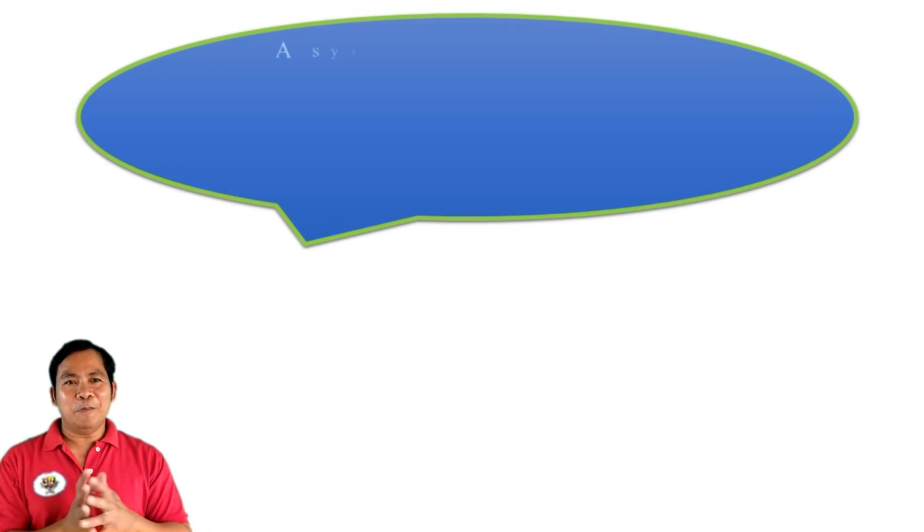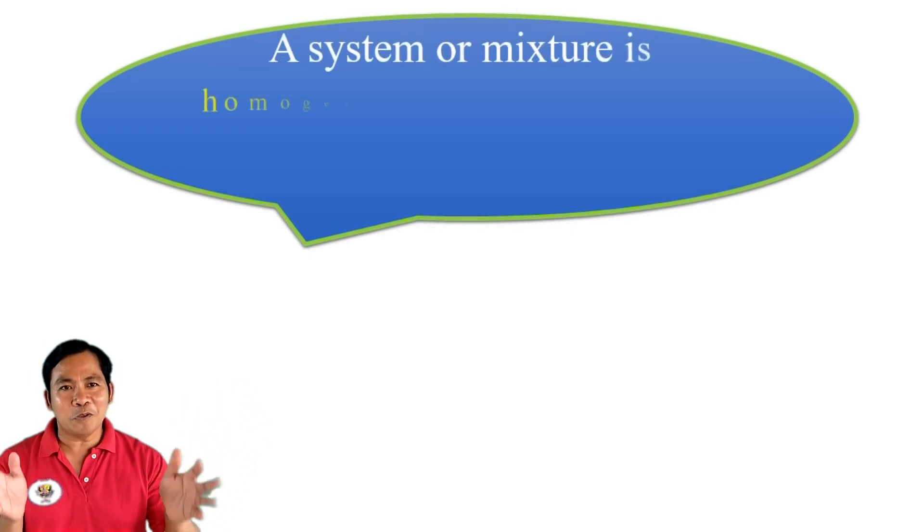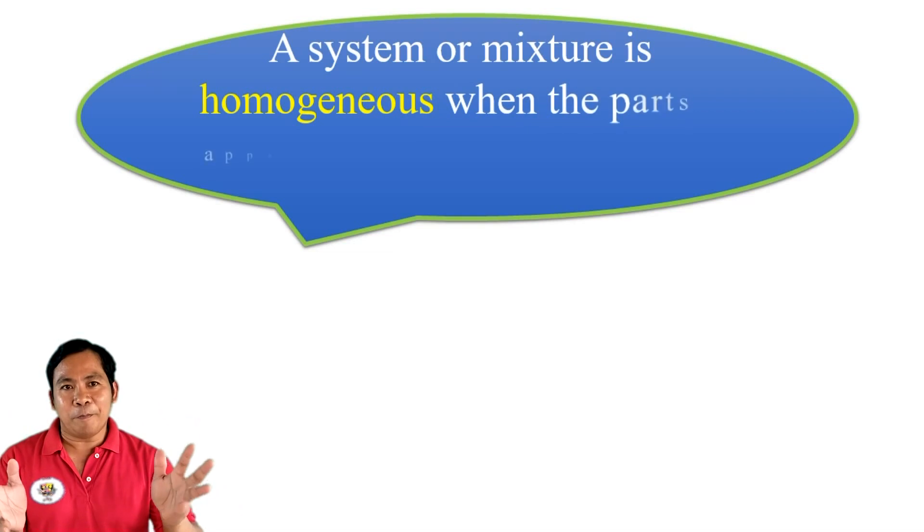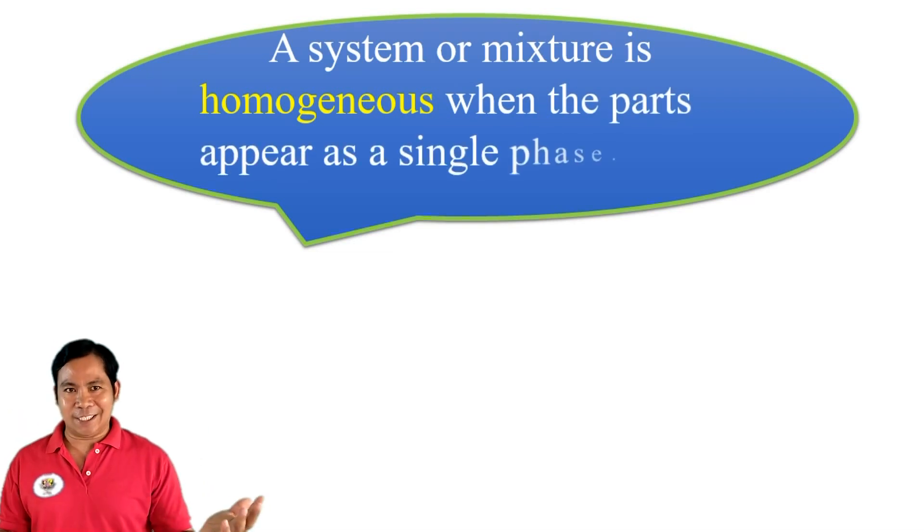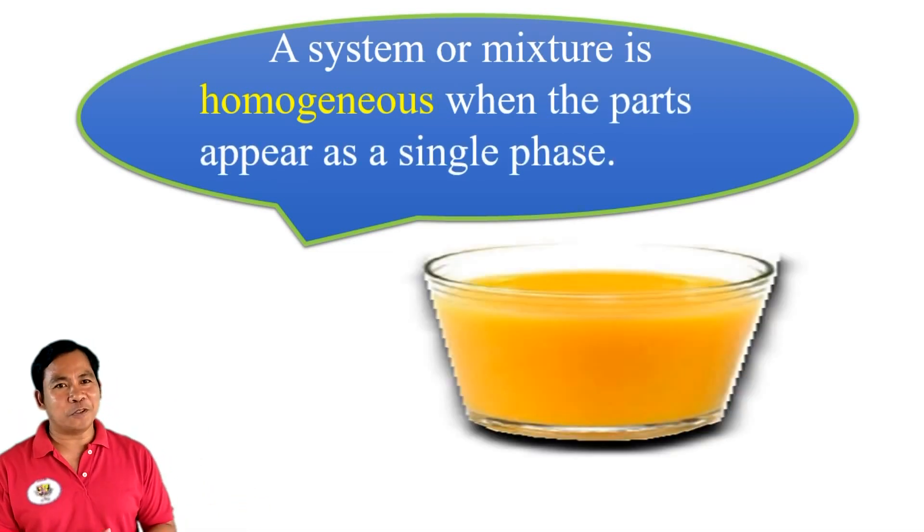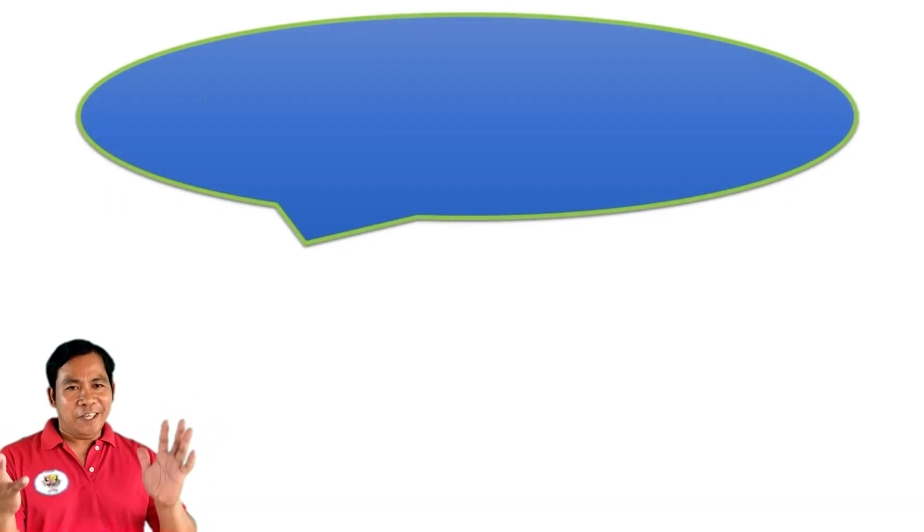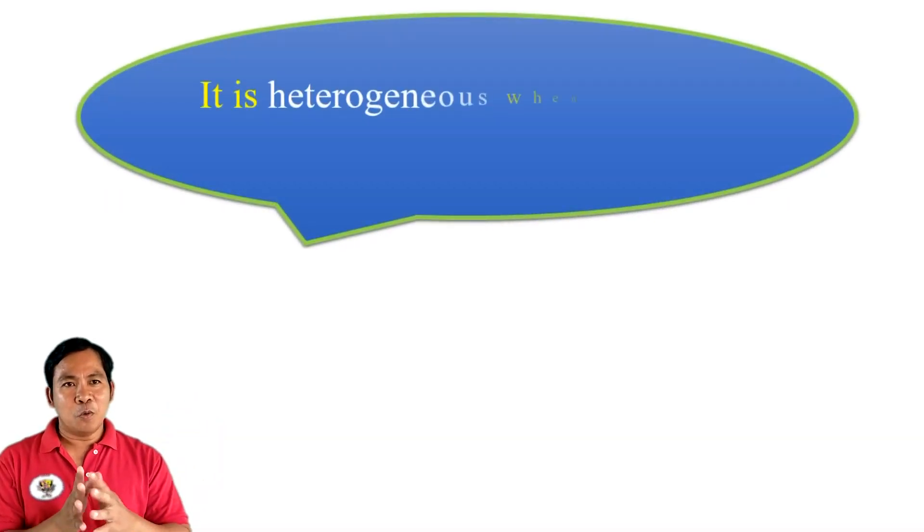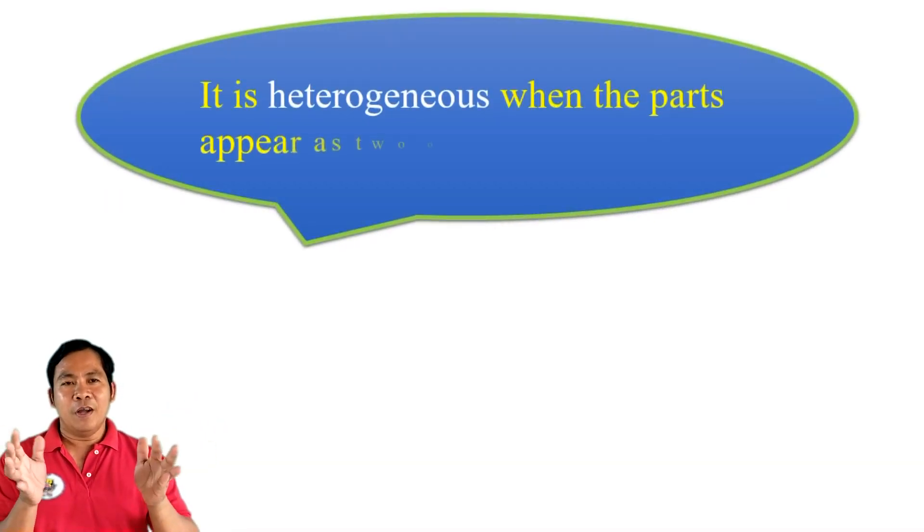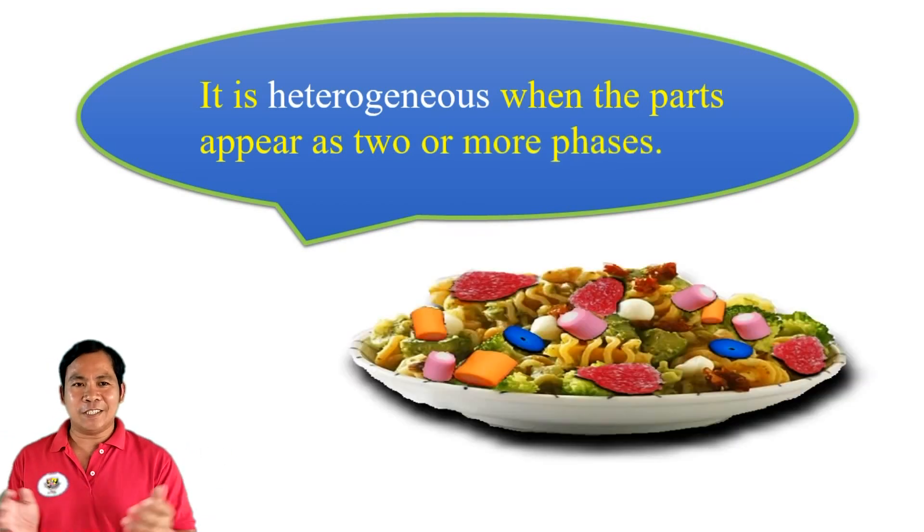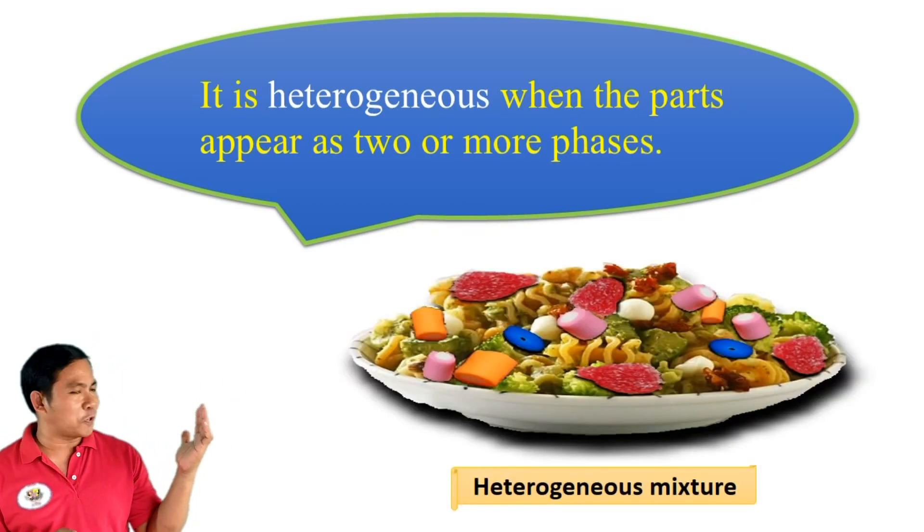A system or mixture is homogeneous when the parts appear as a single face. It is heterogeneous when the parts appear as two or more faces.